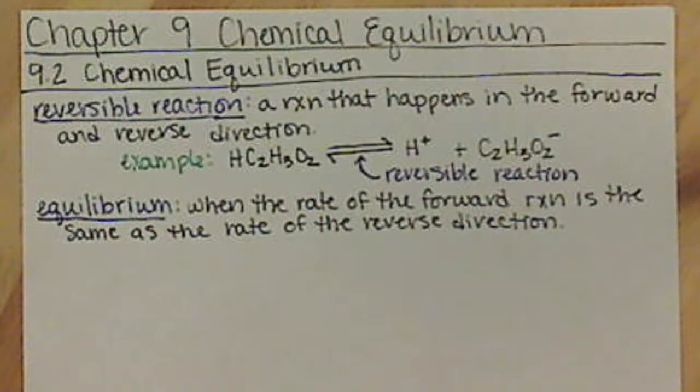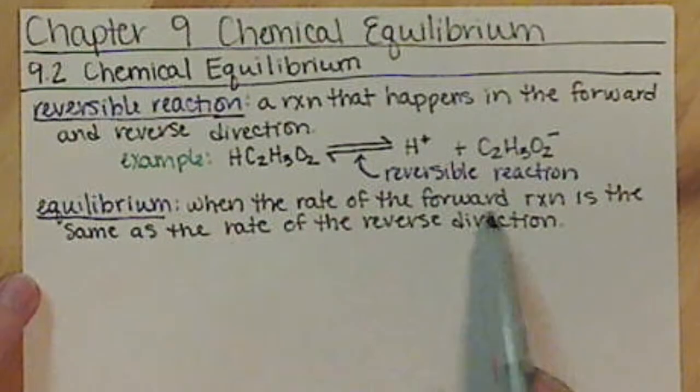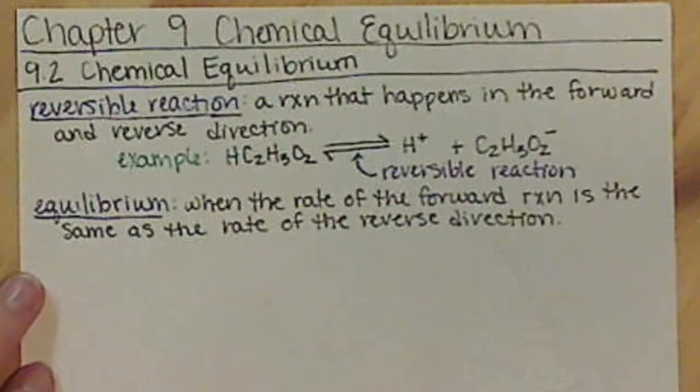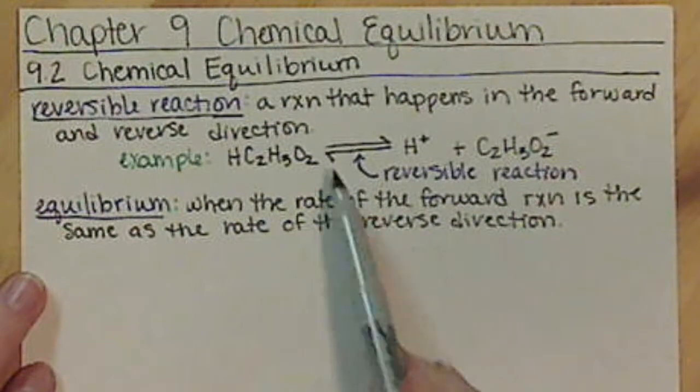Another thing to note about chemical equilibrium—the rate of the forward reaction is equal to the rate of the reverse direction, so we're always going to be moving back and forth.